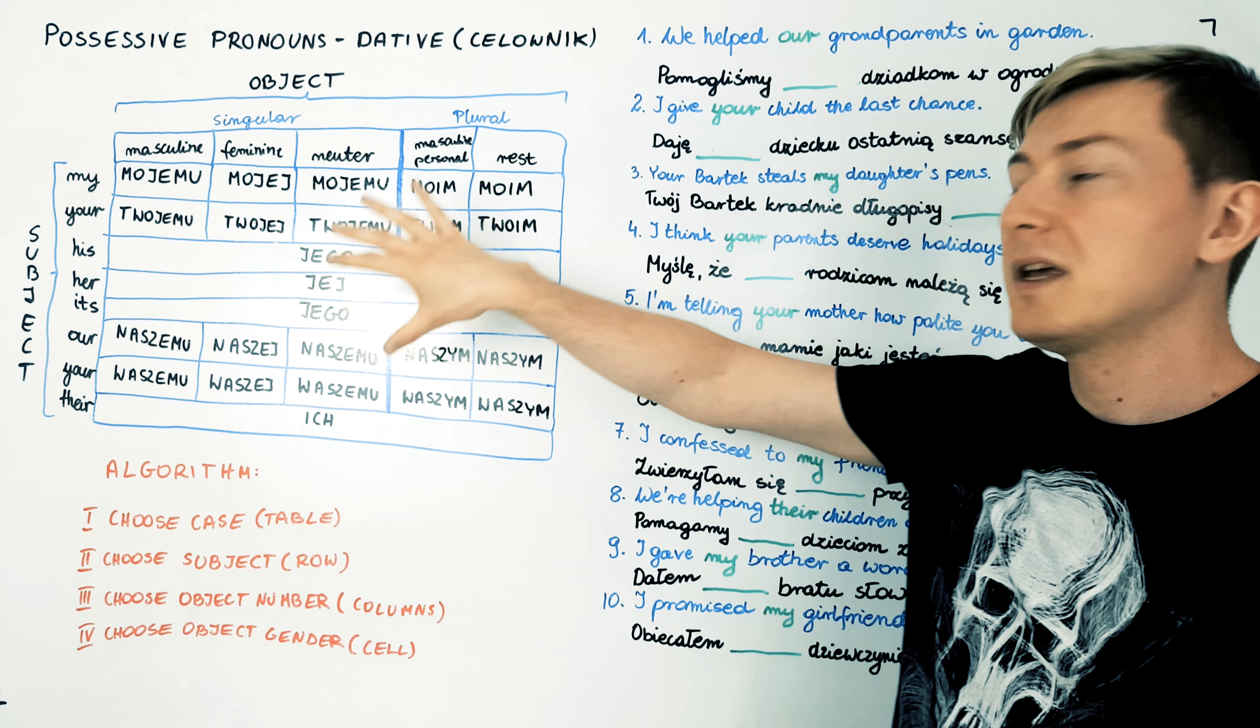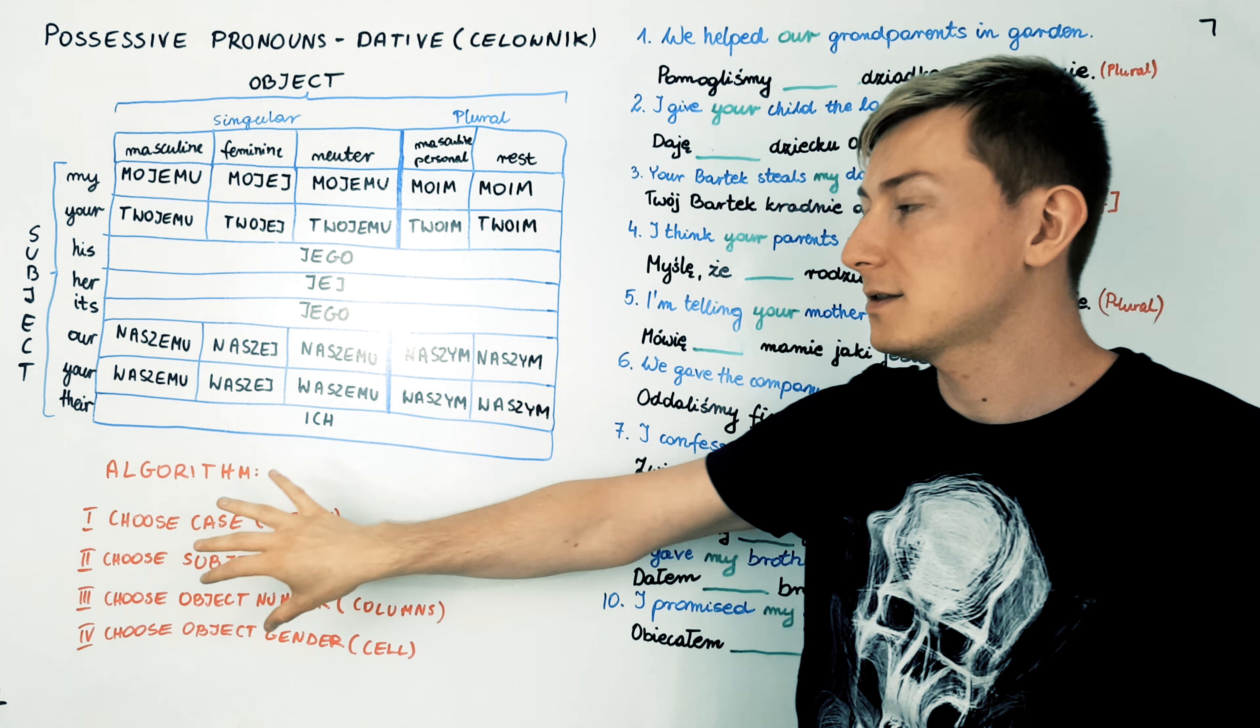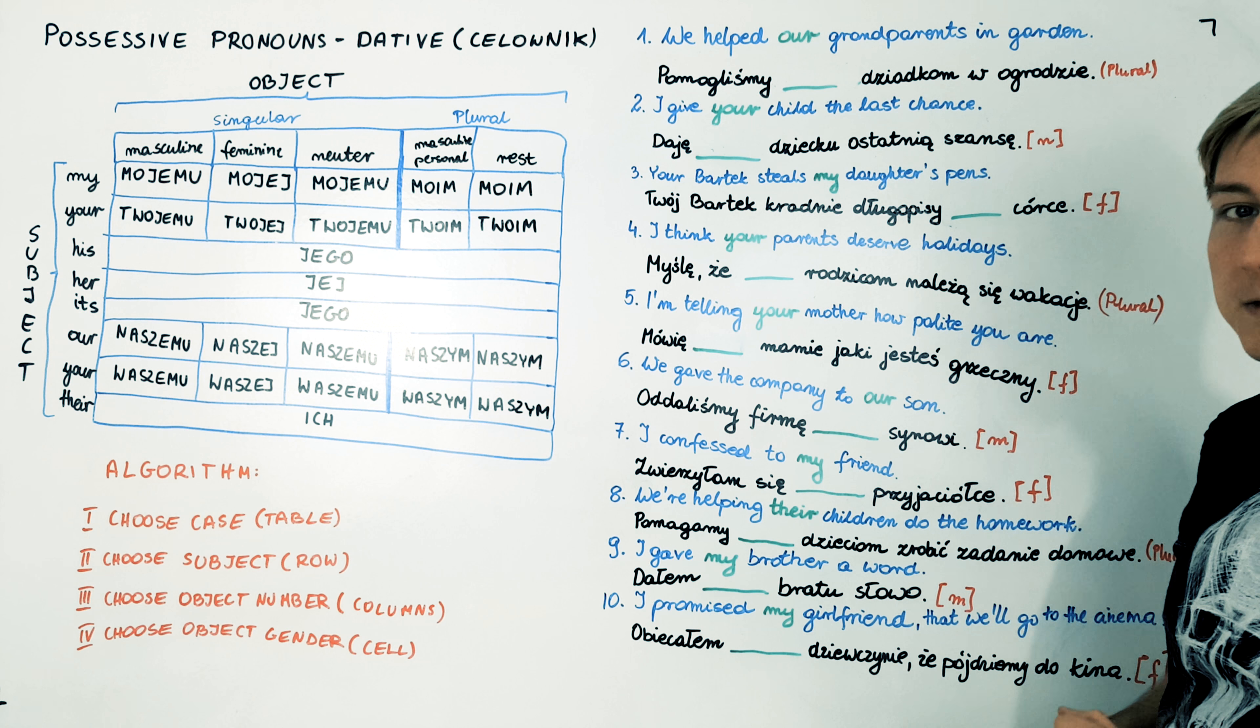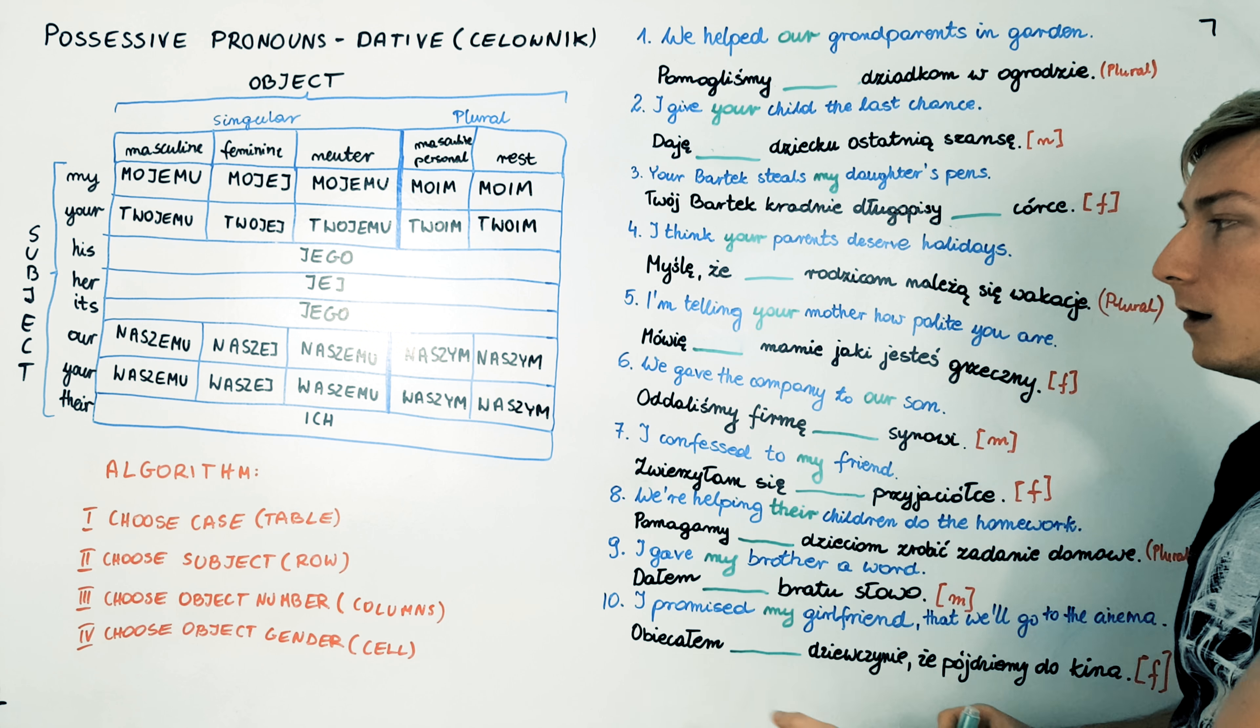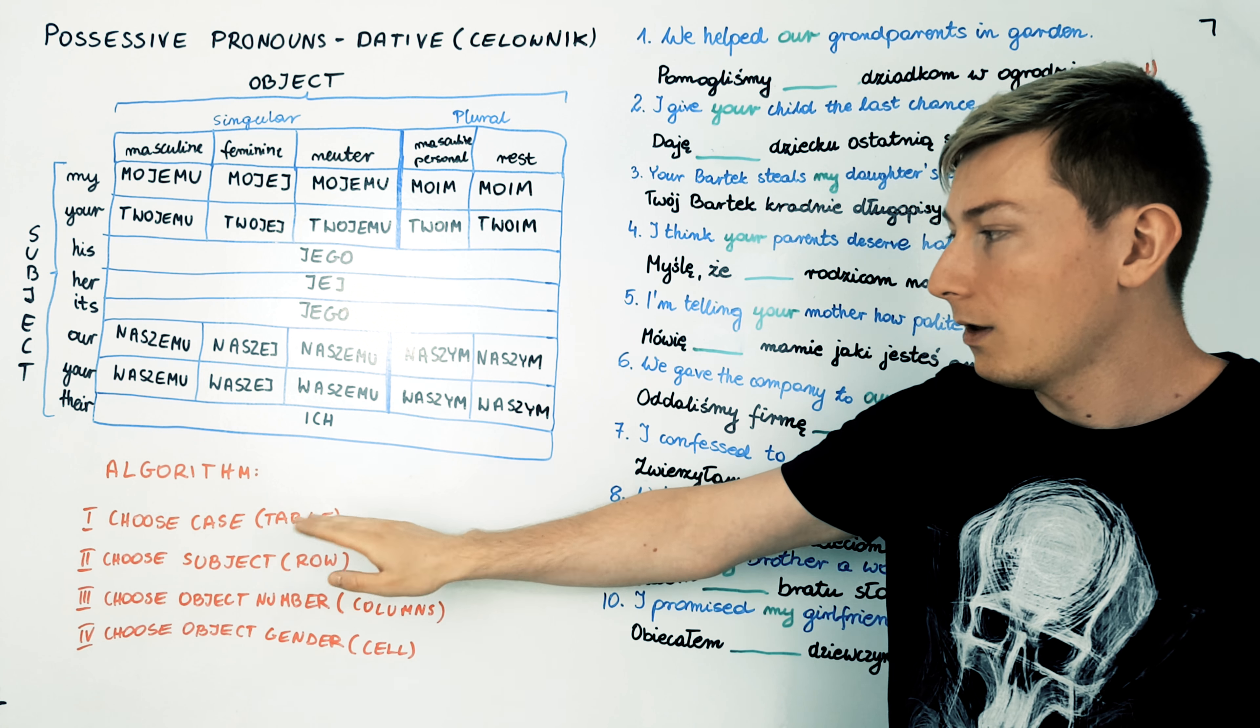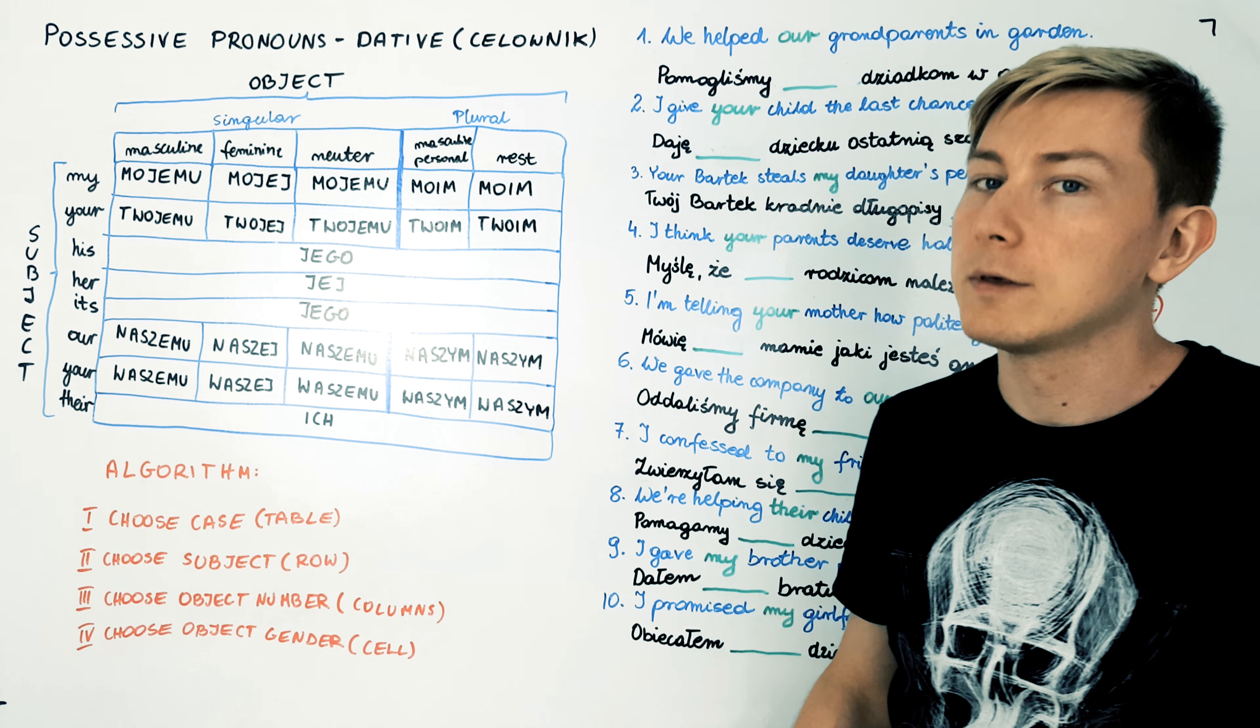We have the table for dative case and the steps of the algorithm. So this is your cheat sheet. And here we have the exercise. 10 sentences. All the sentences require the dative case. So we can skip always the first step of the algorithm.